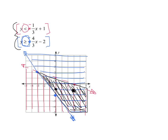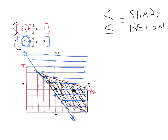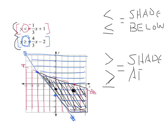One thing to jot down in your notes: anytime you have a less than or less than or equal to symbol, those mean shade below. On the other hand, anytime you have a greater than or greater than or equal to symbol — the alligator just facing the other way — those symbols mean shade above. If you need to make yourself a little cheat sheet, especially while we're working on practice problems, that's perfectly okay.